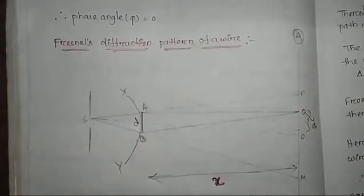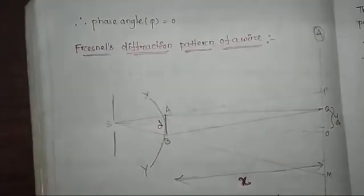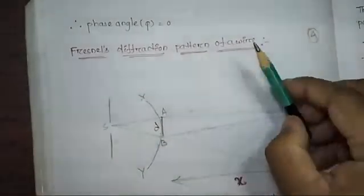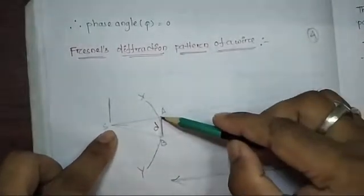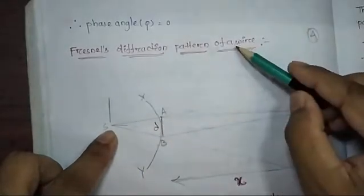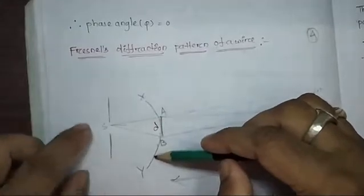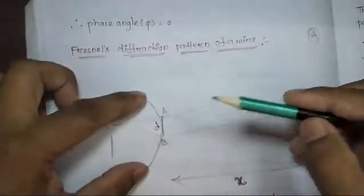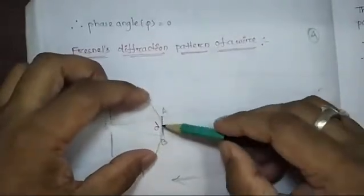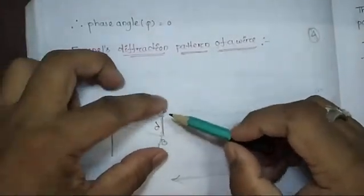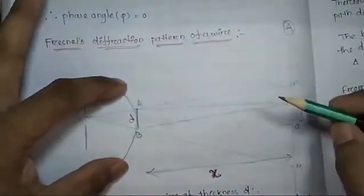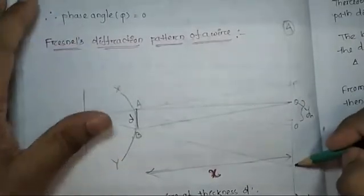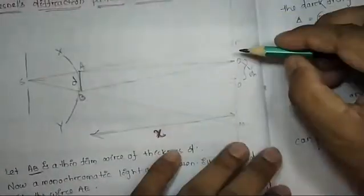Good morning. We are going to discuss Fresnel's diffraction pattern of a wire. Here, S is the source of light energy, AB is the wire, and XY is the wavefront coming from the source S. When this wavefront strikes the wire, the AB portion obstructs the wavefront, but due to diffraction, we can get a diffraction pattern between P and M on the screen.